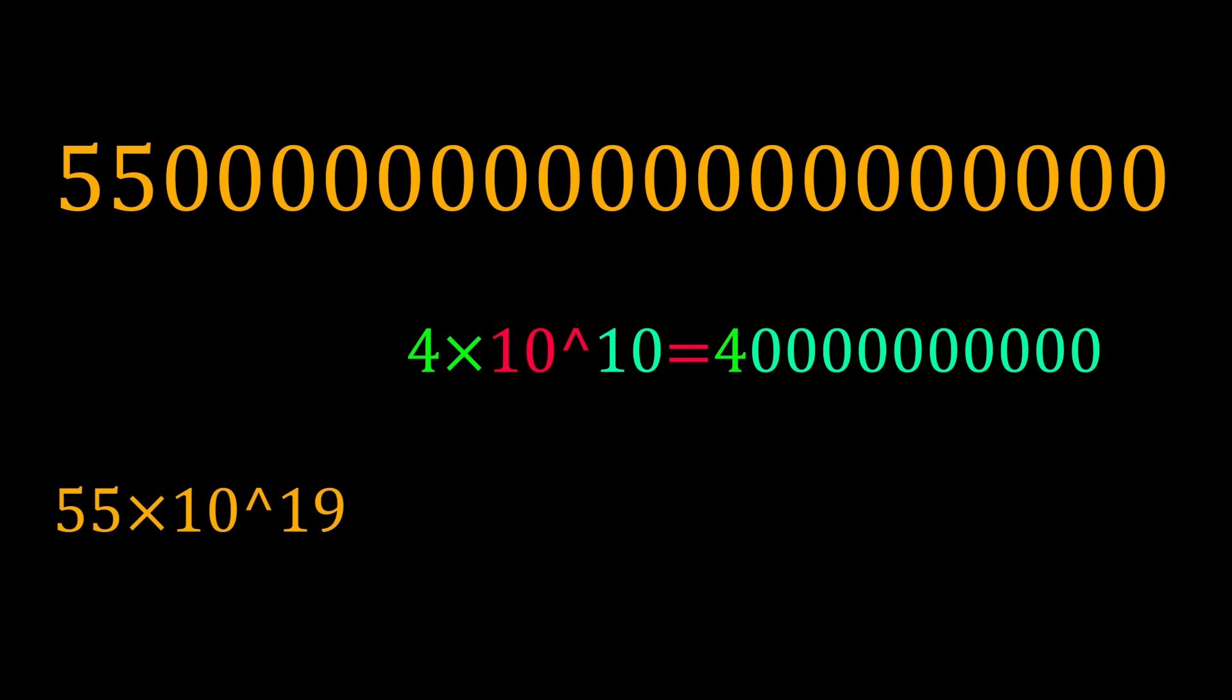But still, this is not in one line. Kinda looks ugly. What we can do is replace this into 10 with E and write the exponents after E. So this is interpreted as 55 into 10 to the power of 19.